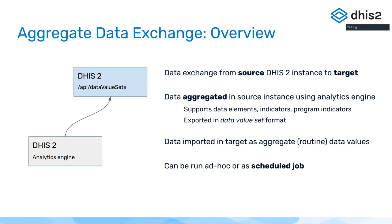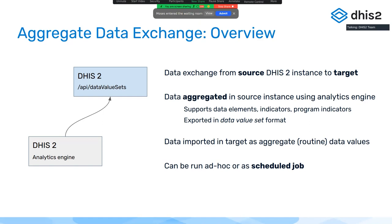For the target instance, we import data as raw data. On the target side, it looks like raw data, and you can treat it, store it, look at it, and use it as you would with any kind of raw aggregate data. This can be run ad hoc using the API or using the new web app we're going to talk about in a minute, or it can be run as a scheduled job — for example, at 2 a.m. every night — using the job scheduler application.